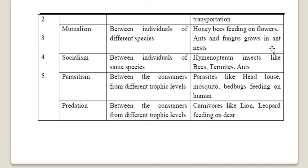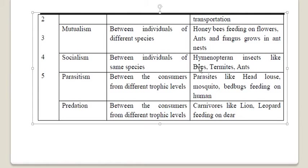In honeybees, there is one queen, drones (kings), and different kinds of workers: nurse bees who take care of the colony and feed the queen and young ones, soldiers who protect the colony, and foragers who go out and bring nectar and pollen for the colony. This division of labor is called socialism.